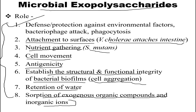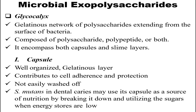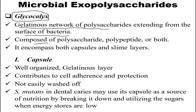Talking about examples of exopolysaccharides, one important one is glycocalyx. Glycocalyx is a gelatinous network of polysaccharides extending from the surface of bacteria. It is composed of polysaccharide, polypeptide, or sometimes both, and encompasses both capsules and slime layers.